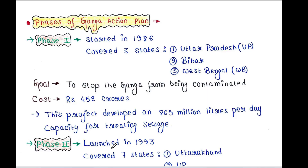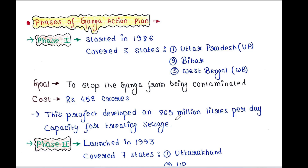There are two main phases of this Ganga Action Plan: Phase 1 and Phase 2. Phase 1 was started in 1986 and it covered three states: Uttar Pradesh, Bihar, and West Bengal. The goal of Phase 1 was to stop the Ganga from being contaminated.